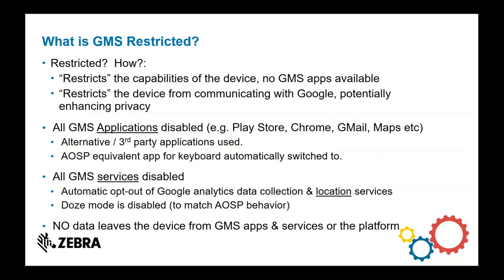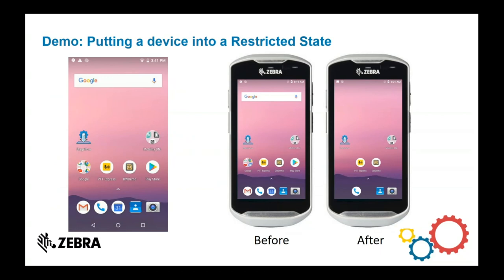I have a very brief demonstration. It's actually a mock-up because it's a TC51, but imagine this is a TC52. Before, you can see there are some GMS apps and Google icons on the home screen. Whereas after you've applied GMS Restricted, all those icons and services go away.